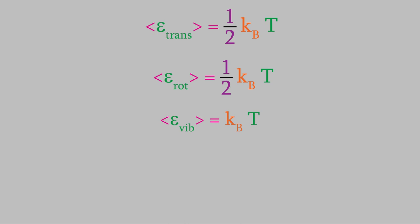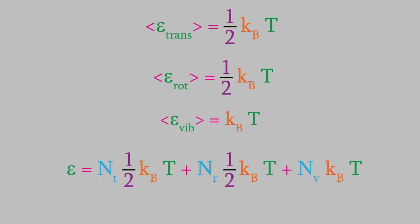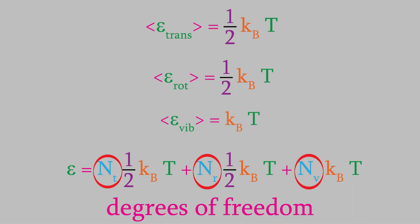To get the total energy a molecule has due to various types of motion, we multiply each energy contribution by the number of translations, rotations, or vibrations the molecule can experience. Those numbers are what we mean by the degrees of freedom.